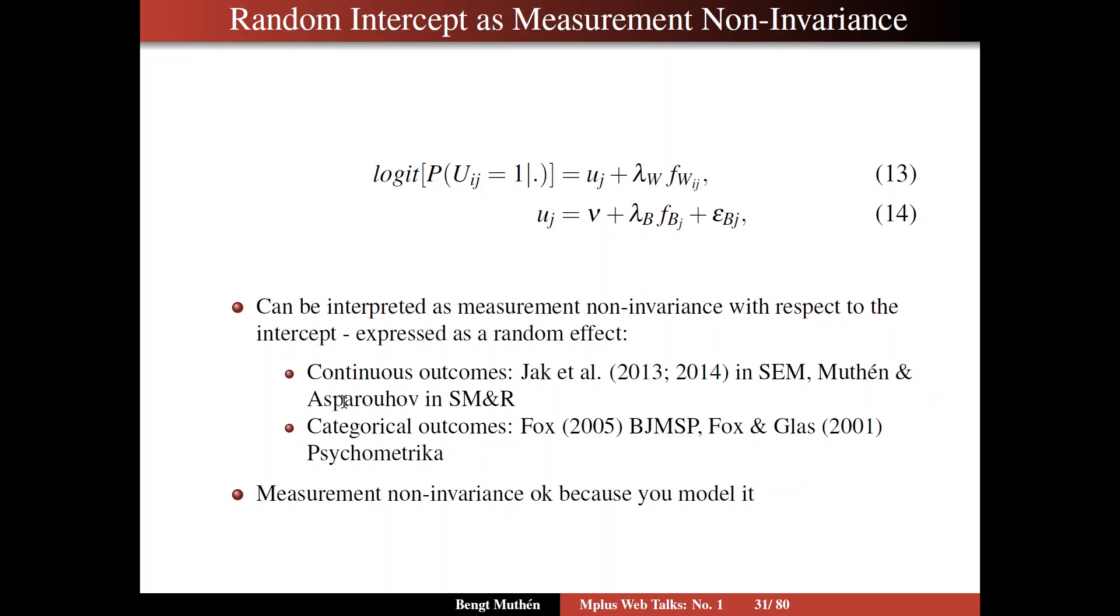Where we compare this random effects modeling of measurement non-invariance to the alignment approach in Mplus. For categorical outcomes, it's been written by Jean-Paul Fox in the British Journal of Mathematical and Statistical Psychology, and by Fox and Glas in a 2001 Psychometrika article. And again, these references, the full format references are given in a separate document that's posted together with this web talk.